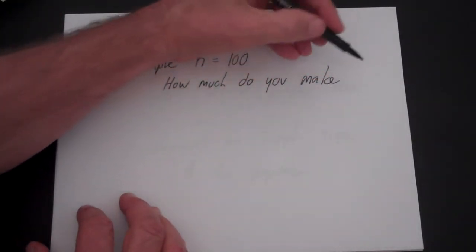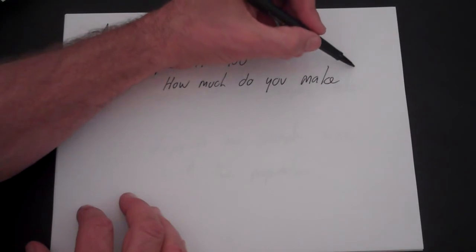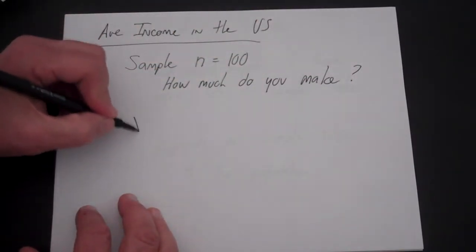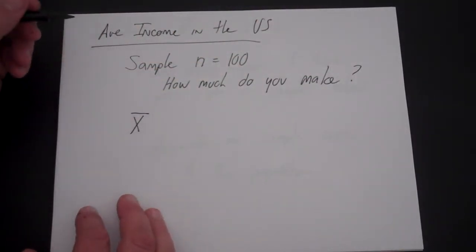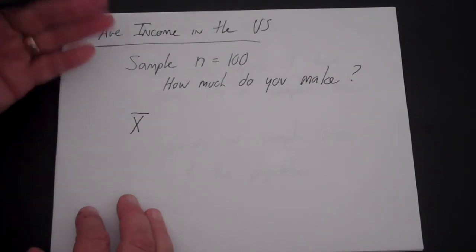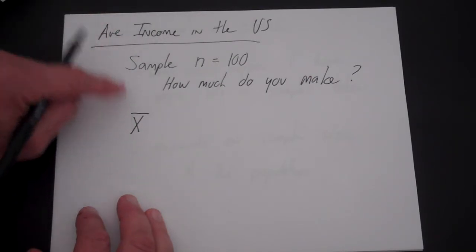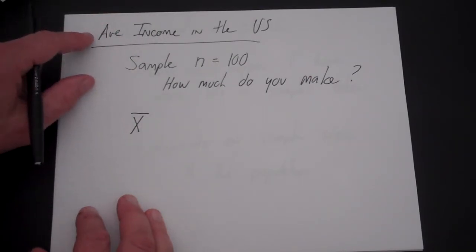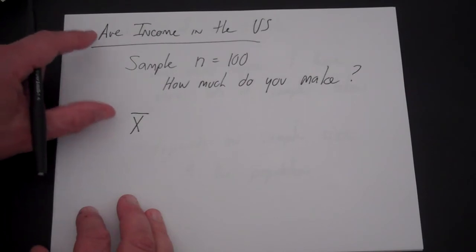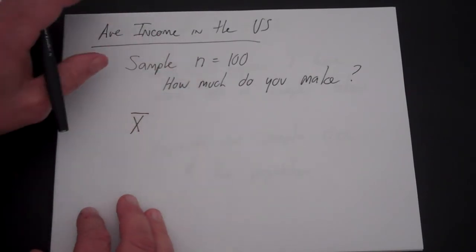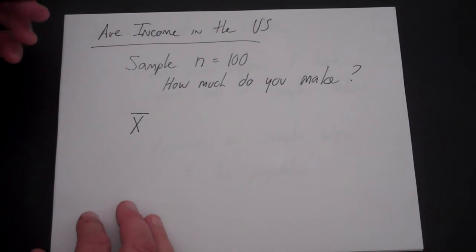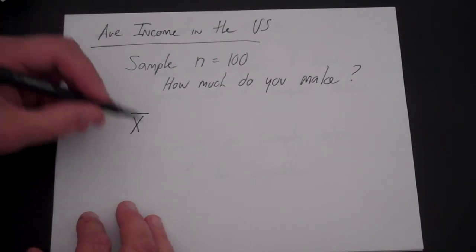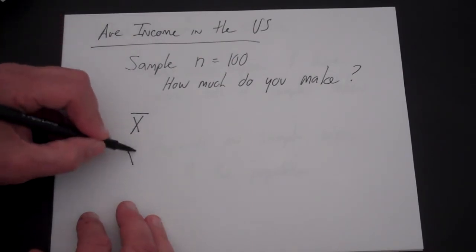If you took one sample, you would get an answer, and that would be x bar, the sample mean. That would be an estimate of the average income for the United States. Whether it was a good sample or not depends on how good your random sample is. If you took another sample, you would get another estimate.